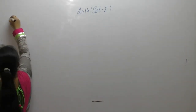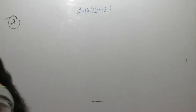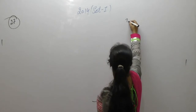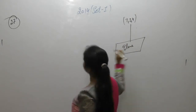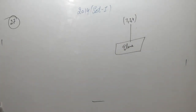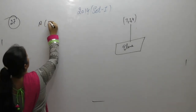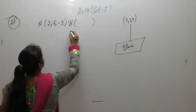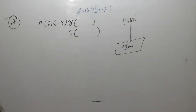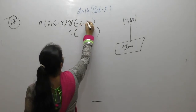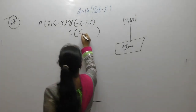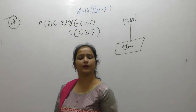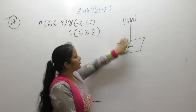Now the next question: find the distance between the point (7, 2, 4) and the plane determined by the three points (2, 5, −3), (−2, −3, 5), and (5, 3, −3). We will use these three points to find the equation of the plane, then find the distance from the given point to that plane.